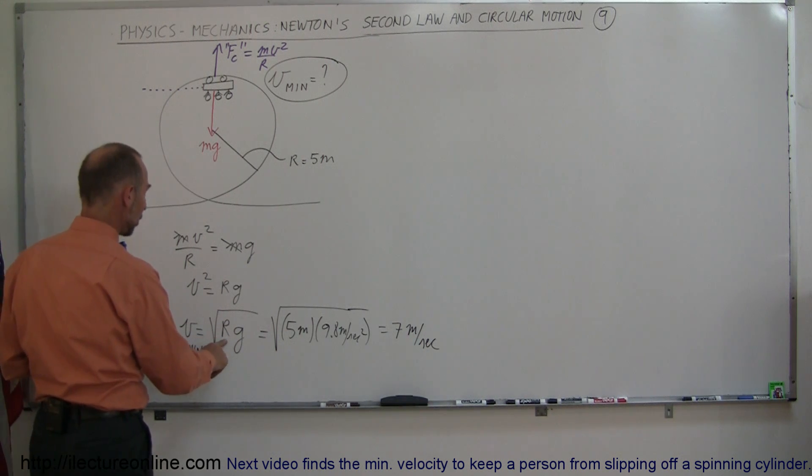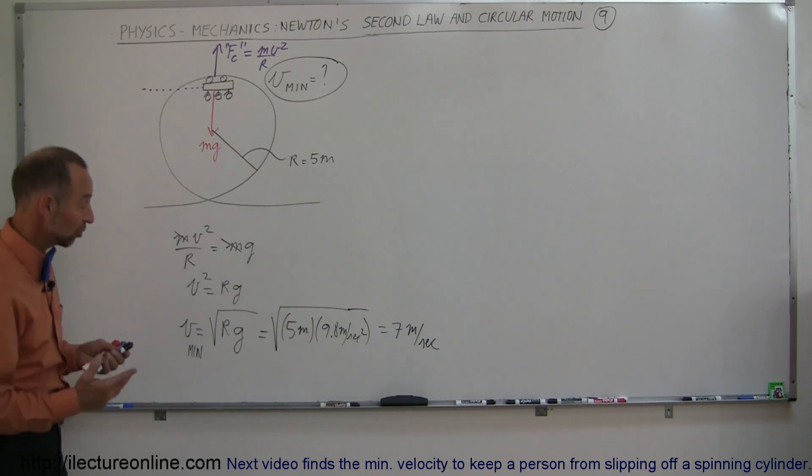If r becomes smaller, you can have a smaller minimum velocity, which is good, which is safe.